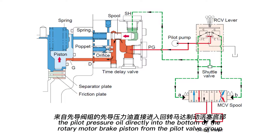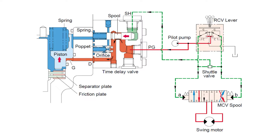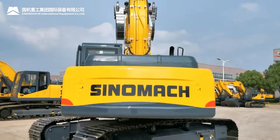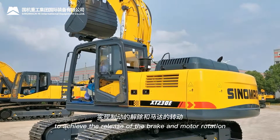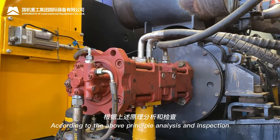The pilot pressure oil enters directly into the bottom of the rotary motor brake piston from the pilot valve groove, overcomes the spring pre-tension force, pushes the piston upward, and makes the brake separation sheet and friction disk separate to achieve the release of the brake and motor rotation.